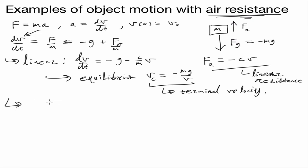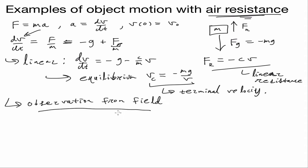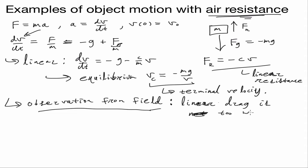It turns out empirically — from observation in aerospace and object motion studies — that this linear drag model is too weak for many fast-moving objects.